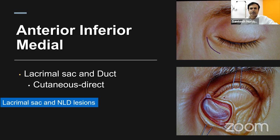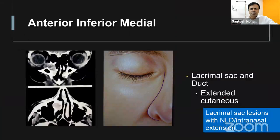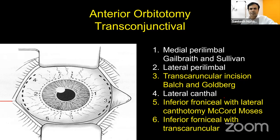For lesions of the lacrimal sac and nasolacrimal duct, use a DCR-type incision. If the lesion extends into the nasolacrimal duct, combine with a lateral rhinotomy incision or complete removal of the nasolacrimal duct and associated bone along with the lacrimal sac for a malignant lacrimal sac lesion.